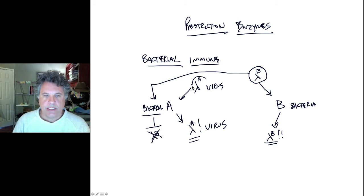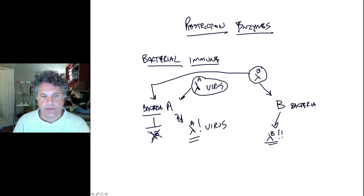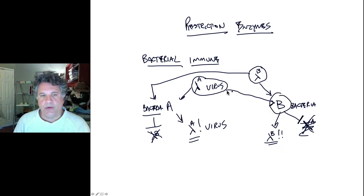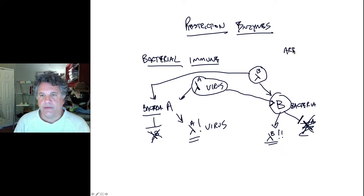However, reciprocally, the A-grown lambda phage that could grow perfectly well on strain A bacteria, when used to infect strain B, would not produce any lambda A progeny — they would not grow. So B bacteria were immune to A viruses and A bacteria were immune to B viruses.